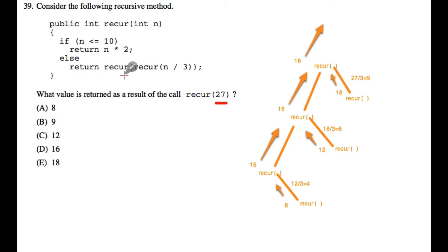Else we return whatever we get from a recursive call to recur. And what we're passing in as the parameter when we call recur is not 27, but a call, whatever we get from a call to recur with dividing n, which starts out as 27, by 3.